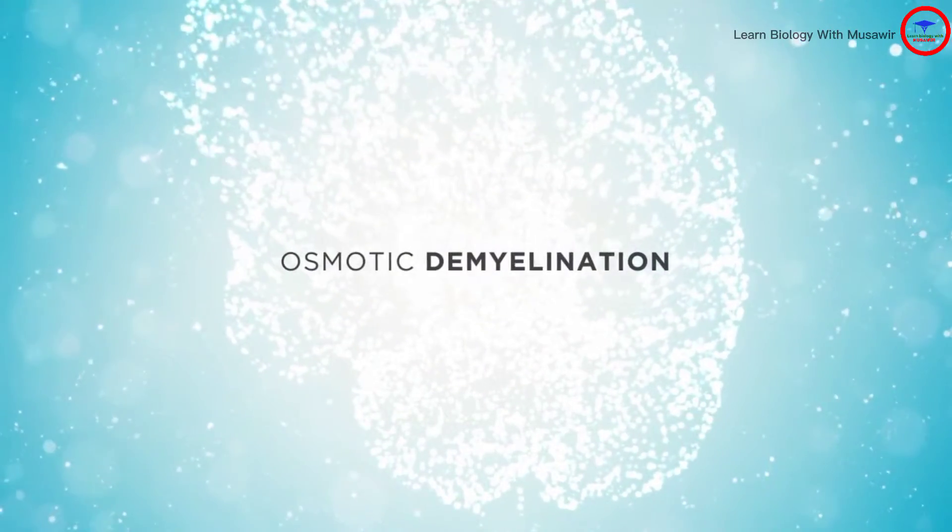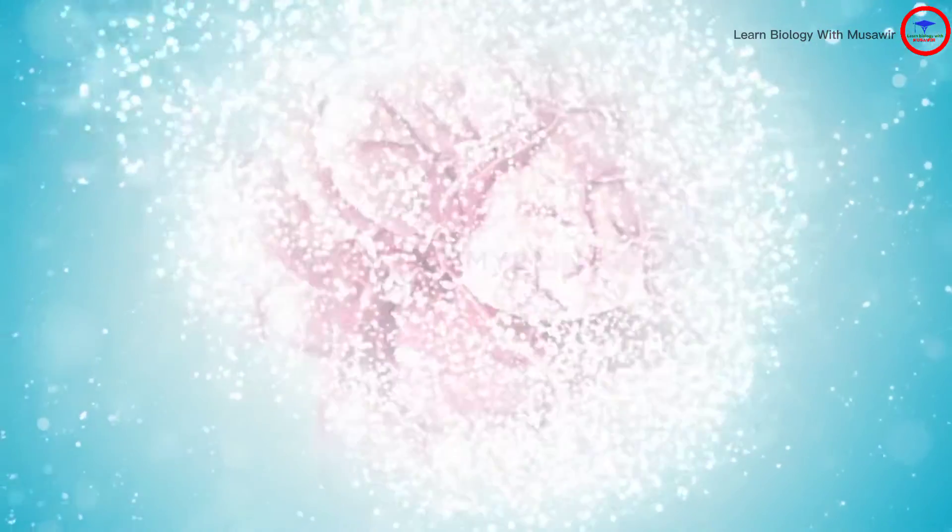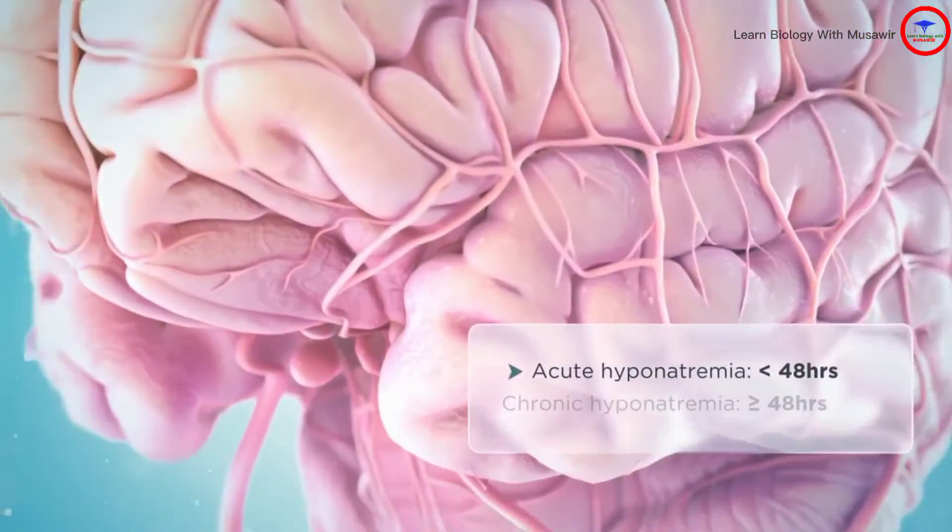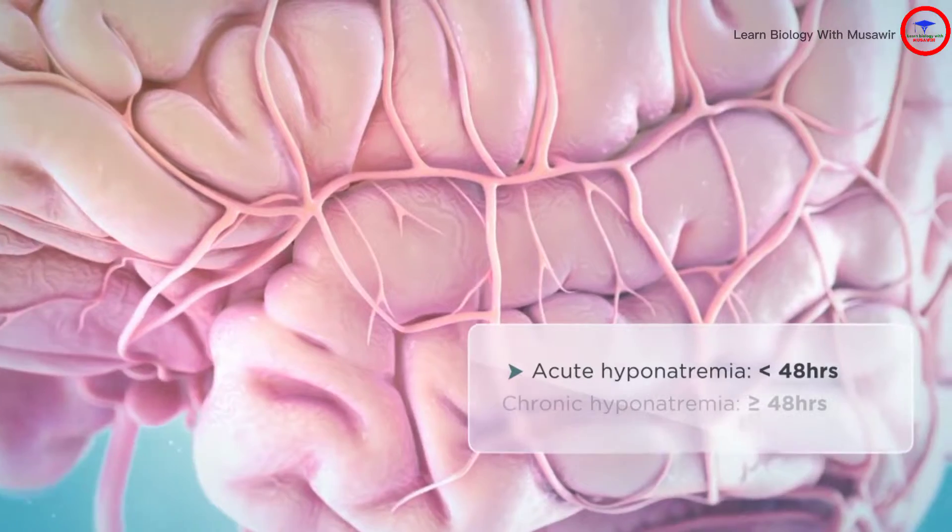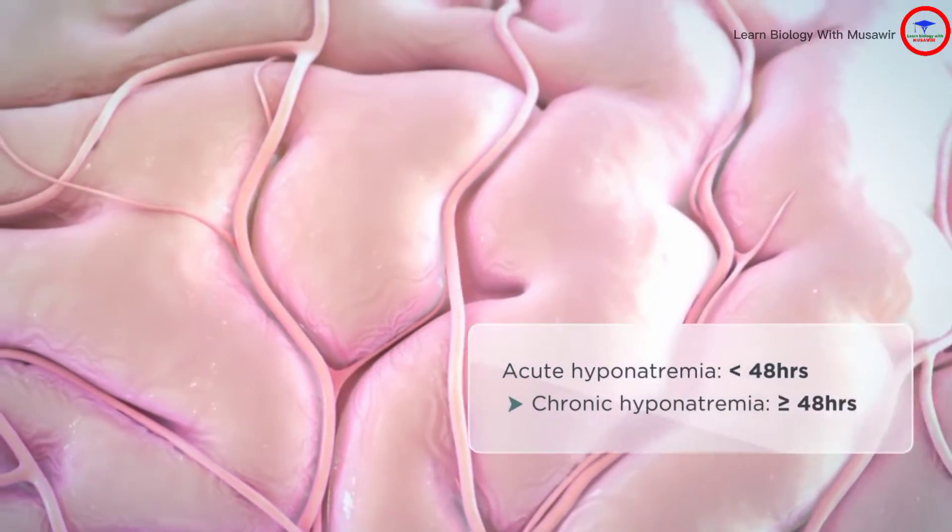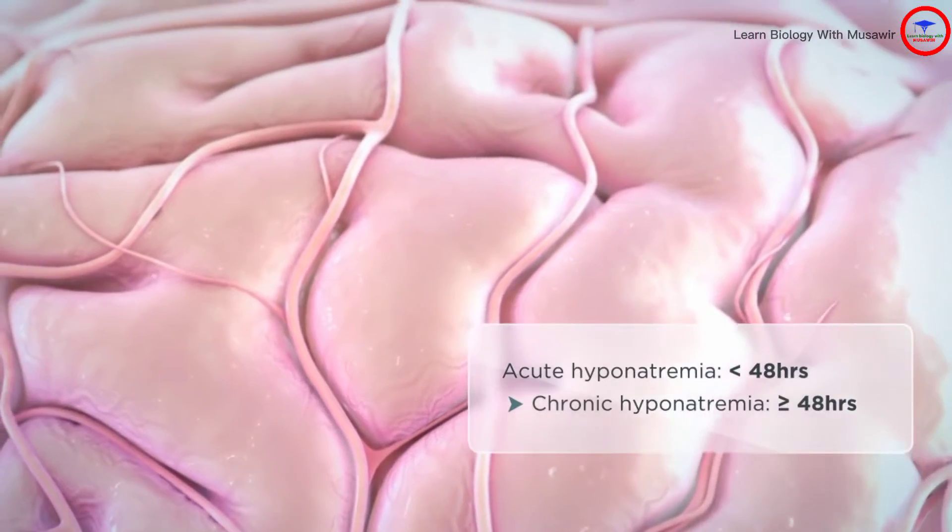Osmotic Demyelination. A variety of neurological symptoms are known to manifest as a result of both acute hyponatremia, defined as usually developing in less than 48 hours, and chronic hyponatremia, defined as lasting 48 hours or more.